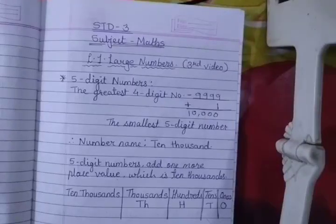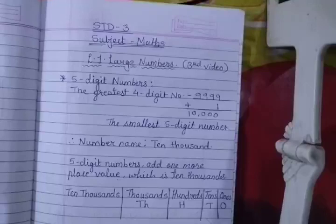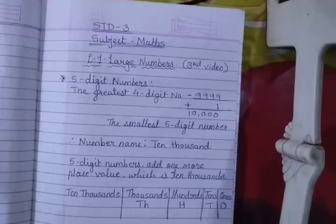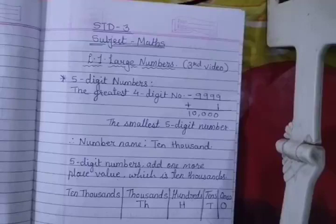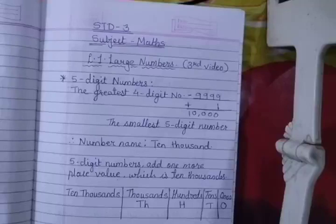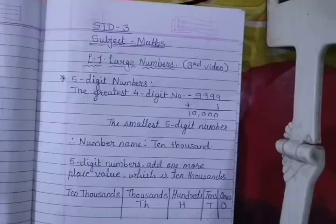Hello students, welcome back to our maths class. We have started our lesson number 1, Large Numbers. In our previous class, we learned how to write the expanded form of a four-digit number. We also saw how to write the number after and the number before, and we solved a few sums from exercise 1.1. Now today, let's continue with our topic.